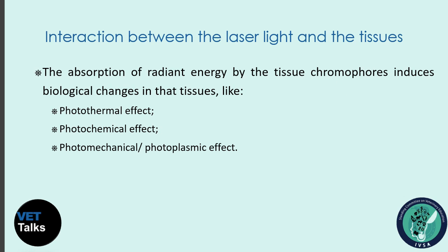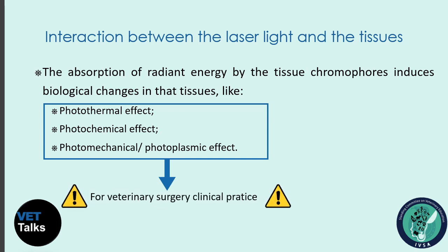The absorption of radiant energy by tissue chromophores induces biological changes in the tissue, like the photothermal effect — where laser light is absorbed by the chromophores and converted into heat. The second is the photochemical effect, where certain molecules in the target tissue act as photosensitizers, capturing energy to the target tissue and not others. The last is the photomechanical or photoplasmatic effect, which is the vaporization of the tissue itself. These are the main changes we want to produce in veterinary surgery.